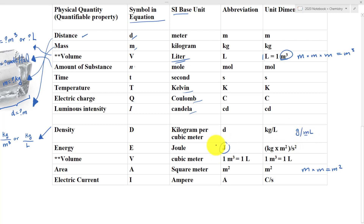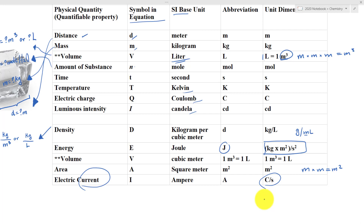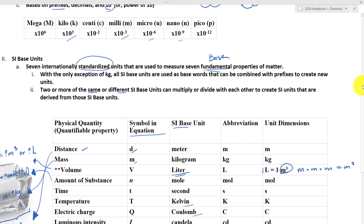Looking at joule — a unit of energy — you can see all the SI base units involved in joules. For electrical current, we have coulombs over second. So SI base units work together to create other units we use to measure different properties of matter in daily life, including energy. That is the power of the SI system.